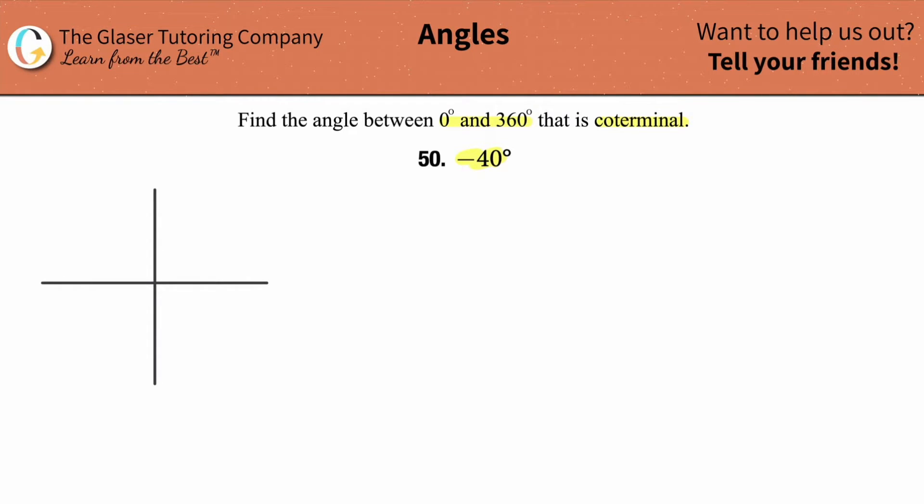So since this is degrees, let's plot our values around the circle. Now, also, it's negative. Remember the negative sign tells you that you're going to rotate clockwise now around, and all your values then will be negative.